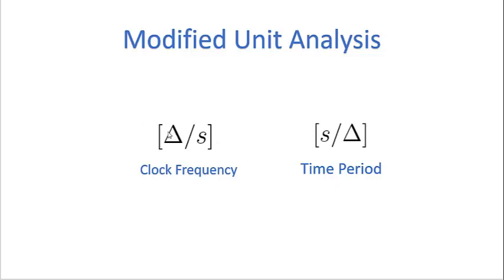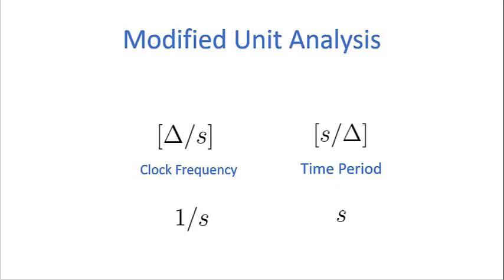The reciprocal of clock frequency is the time period. In modified unit analysis, the time period has units of seconds per cycle. In standard unit analysis, the units of clock frequency are one over s, technically referred to as hertz. I've talked about this in other papers and videos, but I'll reiterate it here.